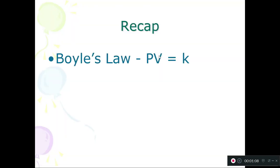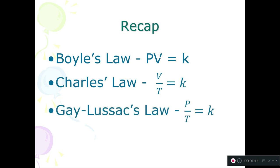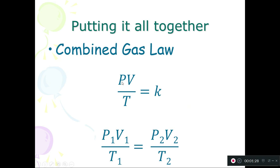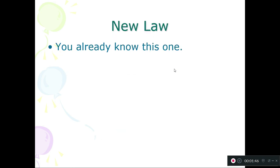To recap where we are: we've talked about Boyle's Law, Charles' Law, and Gay-Lussac's Law — incorporating two variables at a time: pressure and volume, or volume and temperature, or pressure and temperature, while keeping the number of molecules constant. Then we talked about the combined gas law, where we incorporated three variables at once — pressure, volume, and temperature — still keeping the number of molecules constant in a closed container.